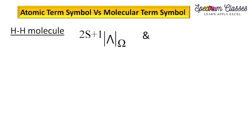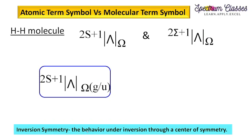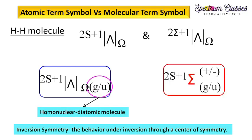Now coming to the molecular term symbol. Here is the term symbol: 2S+1, this is lambda, and this is omega. Sometimes it is also written in another form. Now I am going to elaborate the new term designated here — this is g and u — called inversion symmetry, that is the behavior under inversion through a center of symmetry. The g and u is applicable for the homonuclear diatomic molecule or molecules having a center of symmetry, and it is known as inversion symmetry.